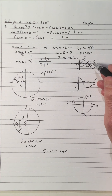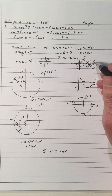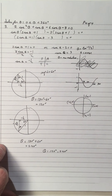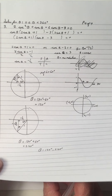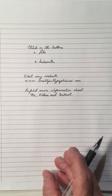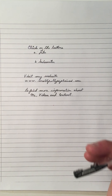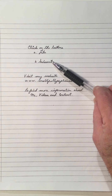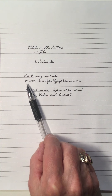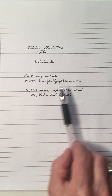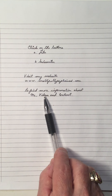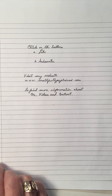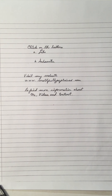So that brings us to the end of this video on solving trig equations by regrouping when you have four terms. If you liked that, click my like button. If you're not a subscriber, click my subscribe button. And visit my math website, www.mathfullyexplained.com, to find more information about me, my videos, and the content on my YouTube channel called Mathfully Explained. Thank you for viewing my video. Bye-bye.